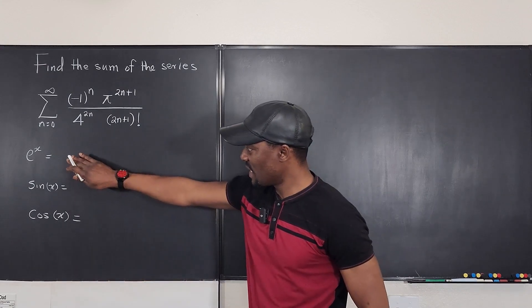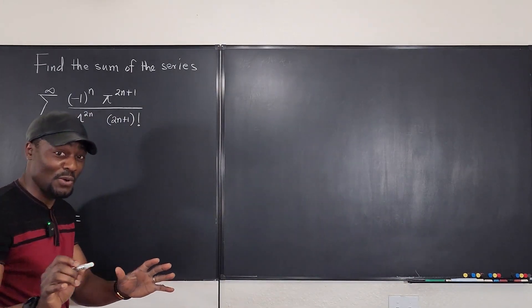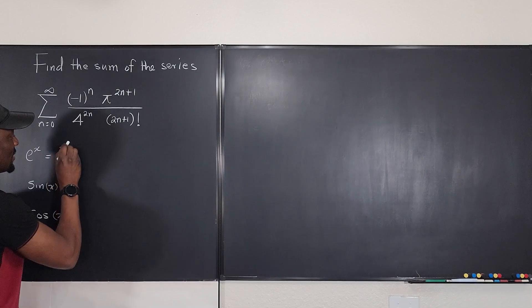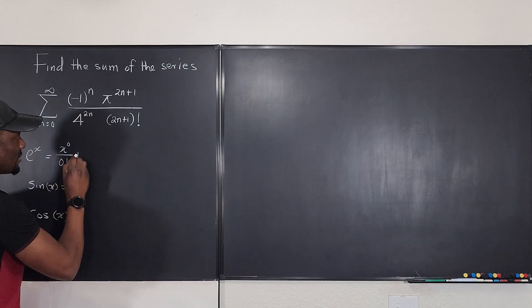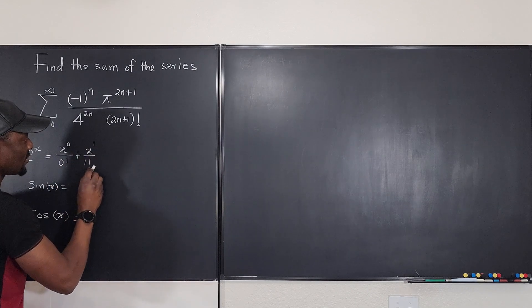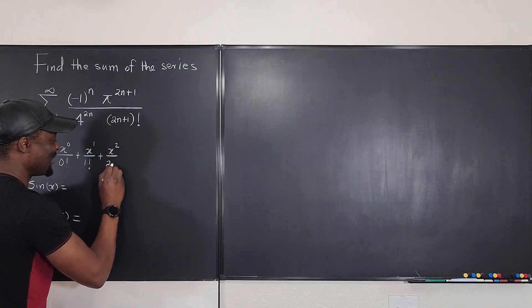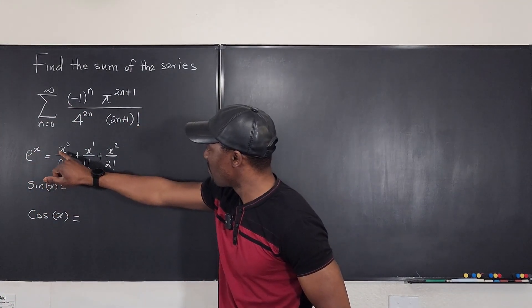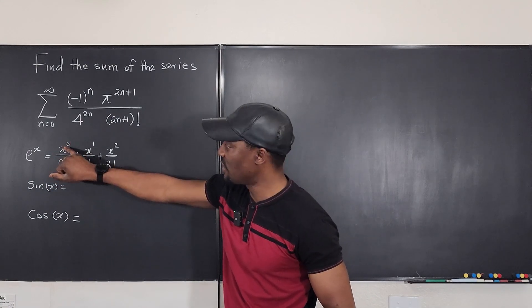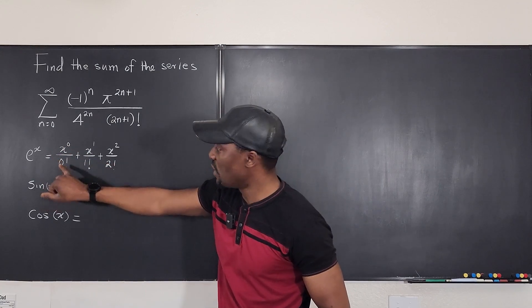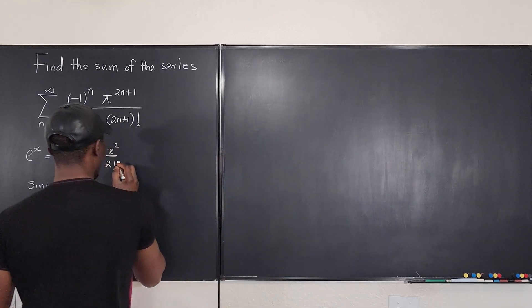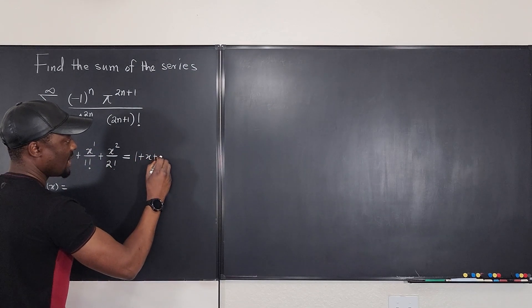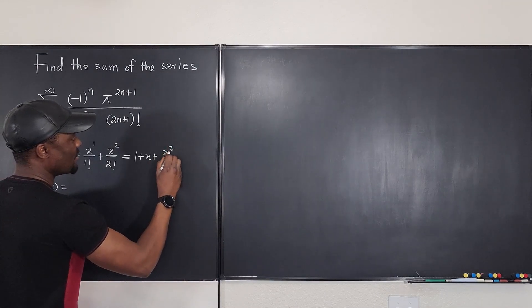The Taylor series for e to the x is the simplest and you must know it. It's written as: x to the zero over zero factorial, plus x to the one over one factorial, plus x squared over two factorial, and so on. You're summing from n equals zero to infinity. The first term — anything to the zero power is one, and zero factorial is one — so the series starts: 1 + x + x squared over 2 factorial...